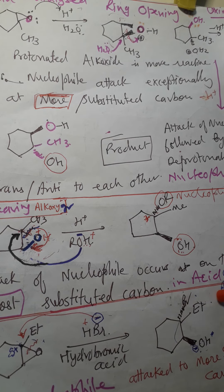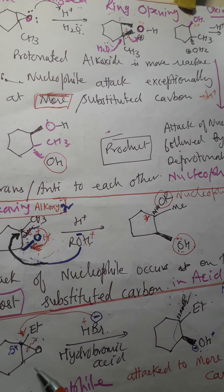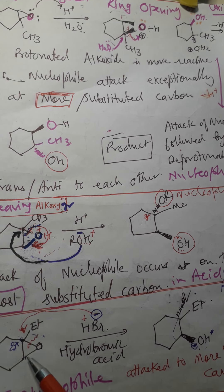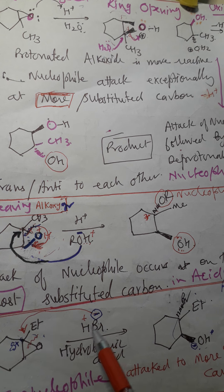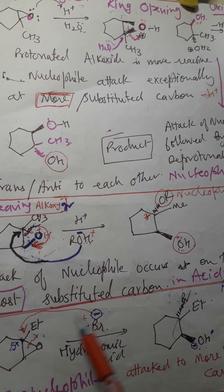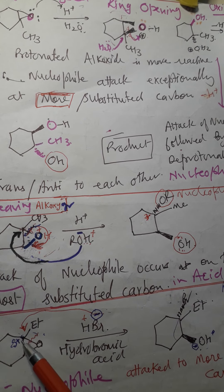In acid-catalyzed reactions, the nucleophile attacks the most substituted carbon. In this third example, we have a cyclohexane epoxide with an ethyl group and we are using HBr. Br⁻ is a nucleophile and will attack the highly substituted carbon.